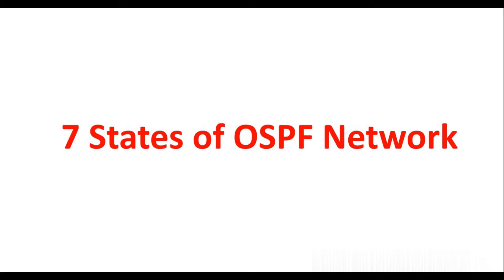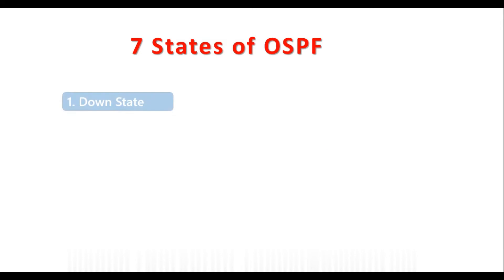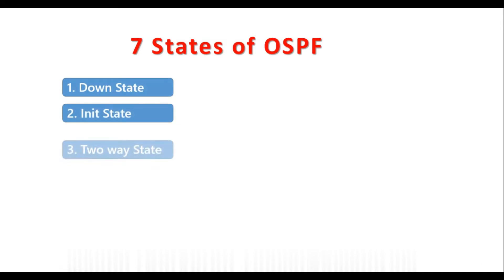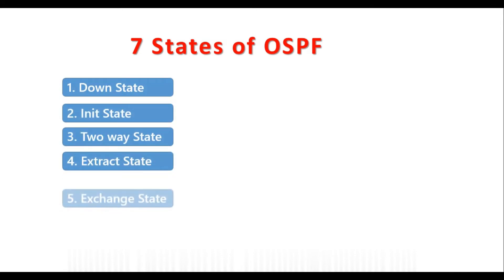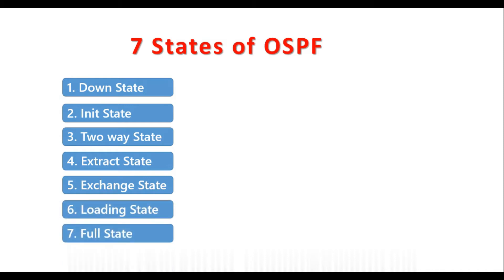Hi everyone. In this video we are going to discuss about the 7 states of OSPF. We have already discussed the fundamentals of OSPF and step-by-step designing and implementation of OSPF in other videos. In this video we are going to see how an OSPF network is formed by undergoing these seven states: Down state, Init state, Two-way state, Exstart state, Exchange state, Loading state, and Full state.